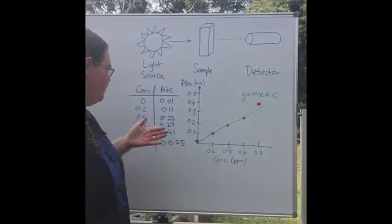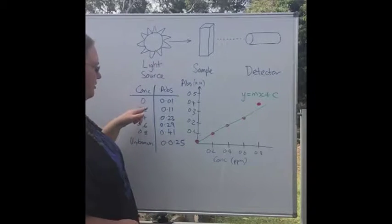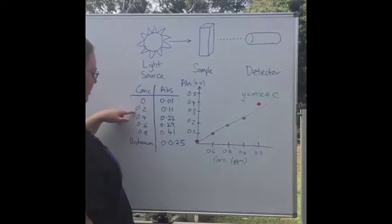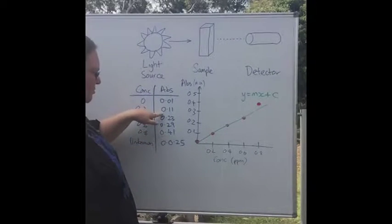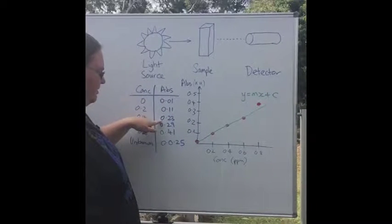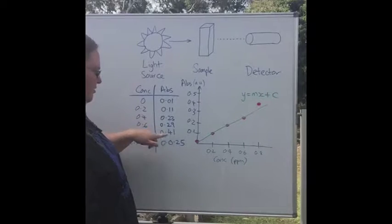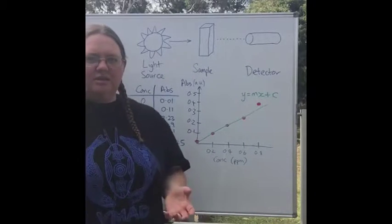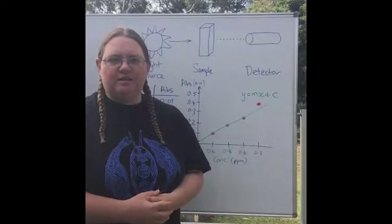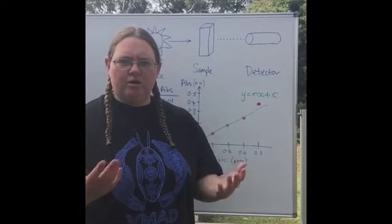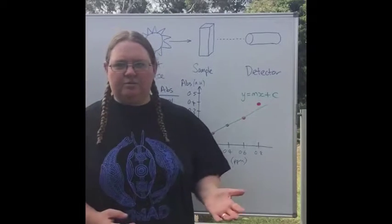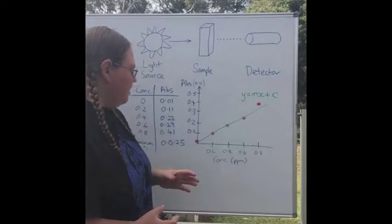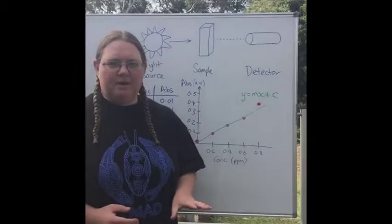All it will give you is a series of numbers. If you've got a concentration of zero, we've got an absorbance of 0.01. For 0.2, we get 0.11. For 0.4, we get 0.23. For 0.6, we get 0.29. For 0.8, we get 0.41. You can see there's a nice trend—as you get more concentrated, you get a higher absorbance. That's what we call the Beer-Lambert law.